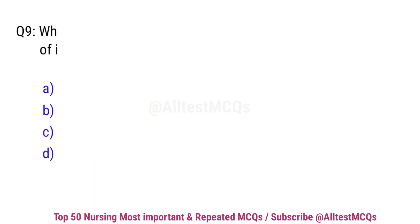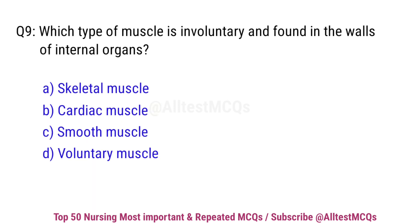Question No. 9. Which type of muscle is involuntary and found in the walls of internal organs? Correct option is C. Smooth muscle.